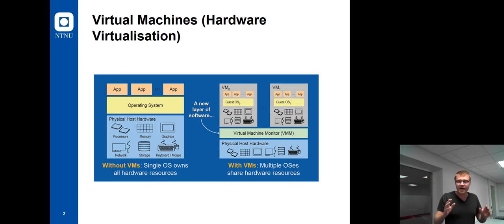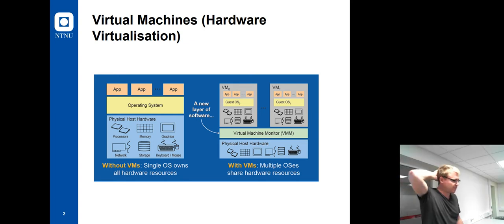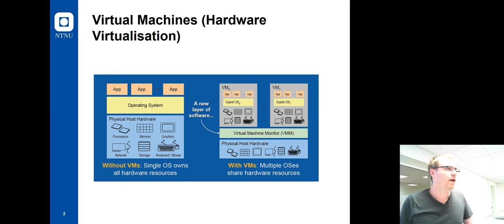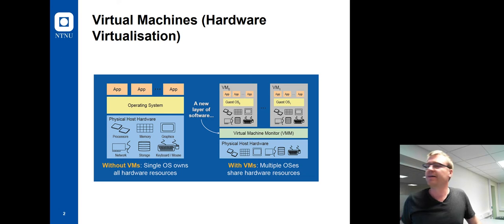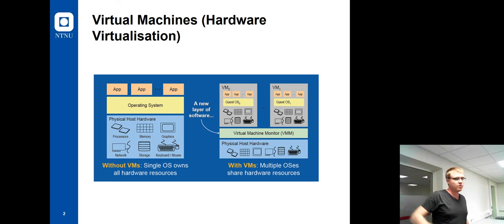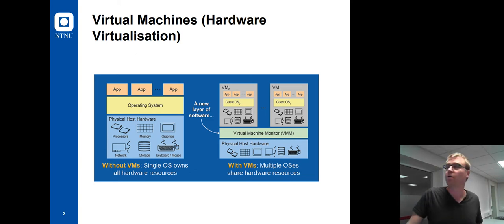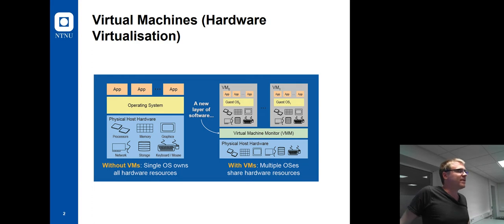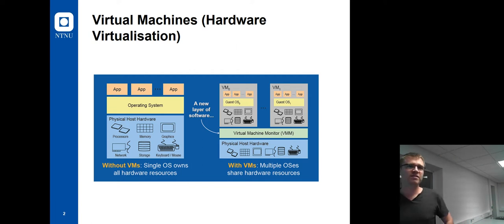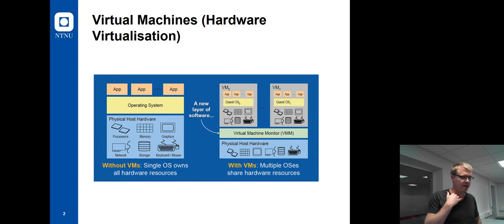Coming back to the idea: one of the core aspects of the operating system is the kernel. A popular definition is that it's the only program running at all times because it monitors the execution of other programs, monitors hardware, and interacts directly with the underlying hardware. It schedules applications because capacity is constrained — CPUs may only have so many cores, yet you're able to run 20 applications at the same time. Someone needs to allocate processor time efficiently.